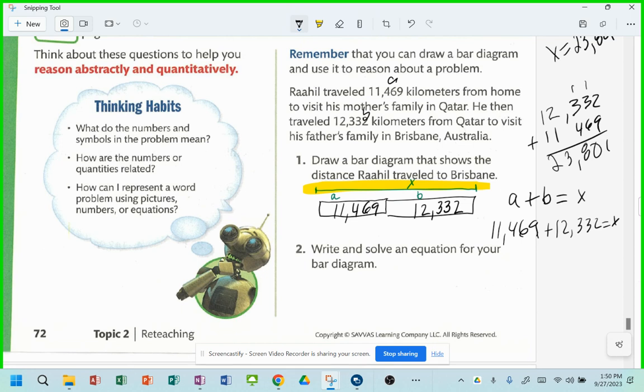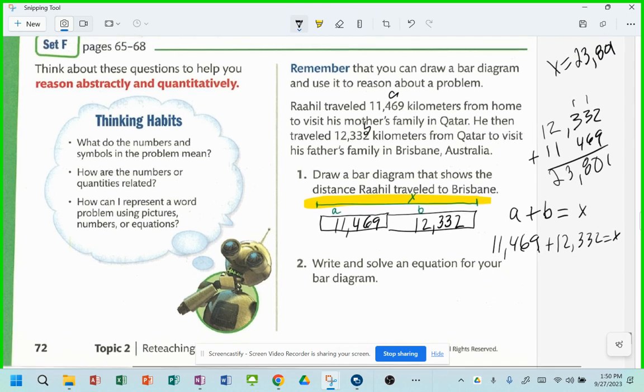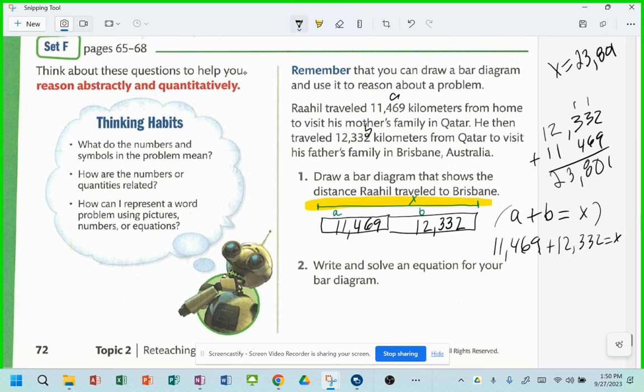Write and solve the equation for your bar diagram. Well, we just did it. Here's the equation that we wrote. A plus B equals X, right? If we knew A was 11,400 - did we do that? Or something similar to it? All right. Well, there you have it. There's my video.